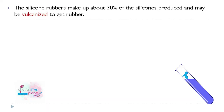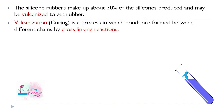Silicon rubber makes up about 30% of total silicon produced, while silicon oil constitutes about 60%. Silicon rubbers are vulcanized to form rubber, a process in which bonds are formed between different chains by cross-linking reactions.